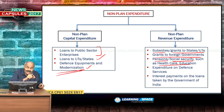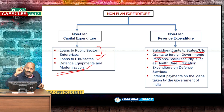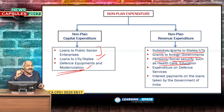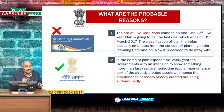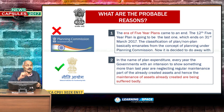Plan expenditure is basically for creation of assets. Non-plan expenditure is of two types: one is capital expenditure and the other is revenue expenditure under non-plan. Now let us look at the probable reasons for eliminating this plan non-plan bifurcation.